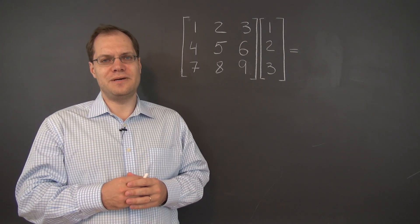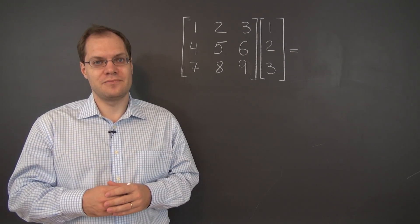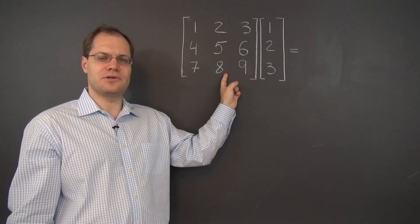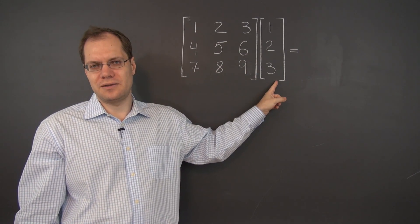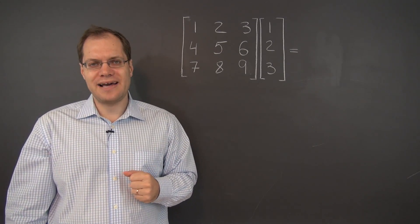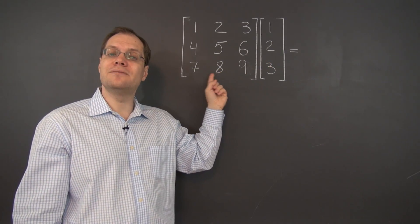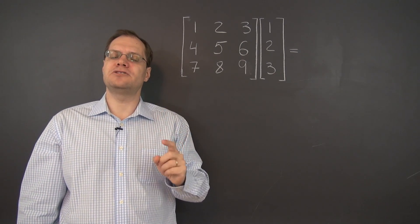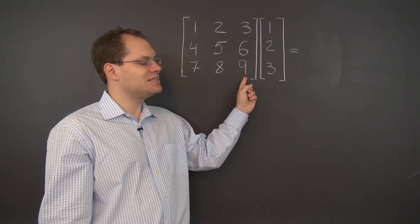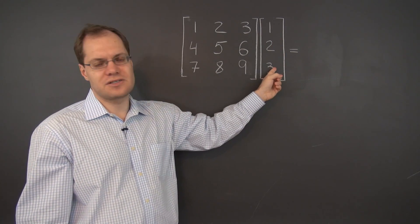Let's begin constructing the definition of matrix multiplication. Matrix multiplication is a very general operation, so we'll start building up our definition from a very specific example: multiplying this 3x3 matrix by this 3x1 matrix. As is always the case with matrix multiplication, the dimensions need to be compatible — there need to be as many elements in this single column as there are columns in the matrix on the left. This matrix product invites you to calculate the linear combination of the columns of the matrix on the left, where the coefficients come from the matrix on the right.